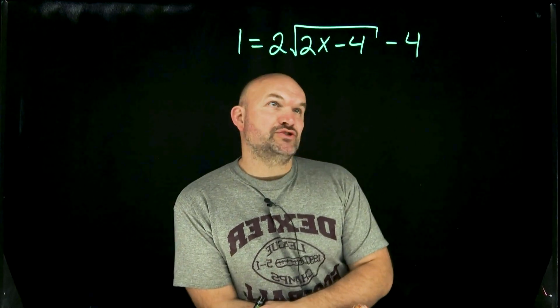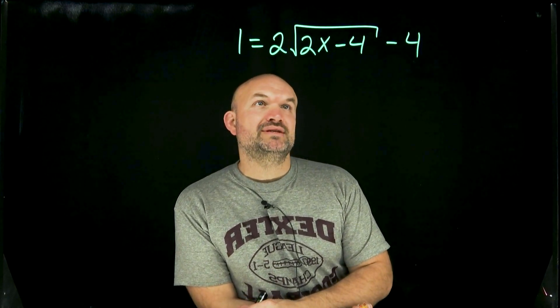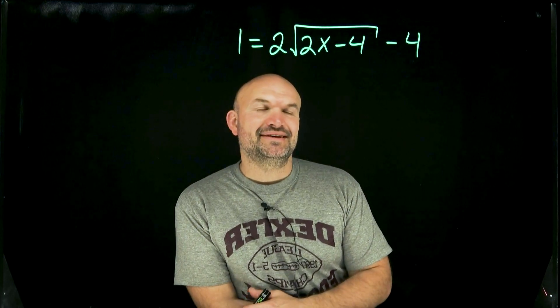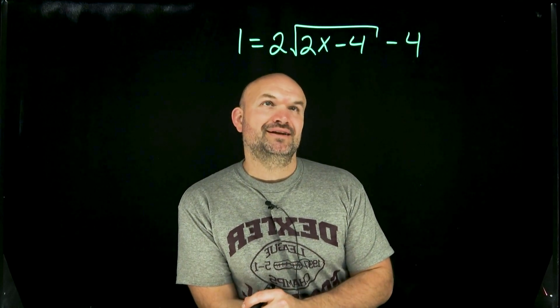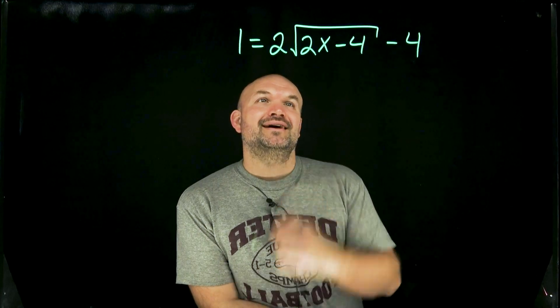This is what we call the peel the onion strategy. So on a problem like this, what we simply need to do is isolate the x. It seems fairly basic, but there's a lot that's happening to this x, right?